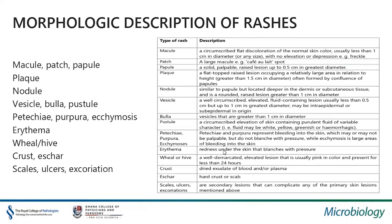Let's look at morphology and the kinds of rashes. A macule is a circumscribed flat discoloration of the normal skin, usually less than one centimeter in diameter, with no elevation or depression when you palpate such a rash. A patch is a large macule — a common example is a café-au-lait spot. A papule is a solid papilliform lesion, usually up to 0.5 centimeters in diameter. A plaque is a flat-topped raised lesion occupying a relatively large area, often formed by the confluence of papules. A nodule is similar to a papule but located deeper in the dermis or subcutaneous tissue, usually rounded and greater than one centimeter in diameter.